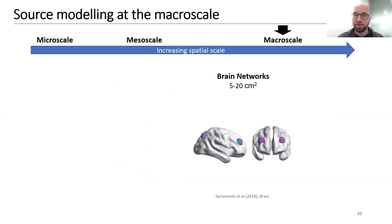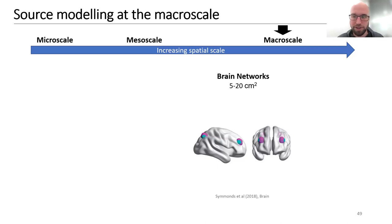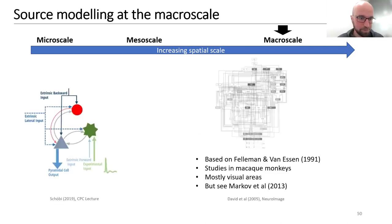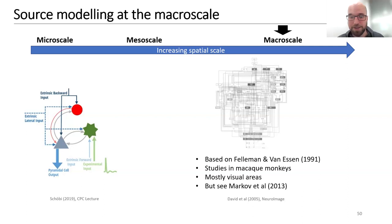Now we have a connected cortical column. Next we need to identify a network and connect the sources. We pick our regions — say four sources — but how do we connect them? In DCM/SPM this is based on work from Felleman and Van Essen, which derives connectivity rules based on the position in the cortical hierarchy from studies mostly in macaque monkeys and visual areas.